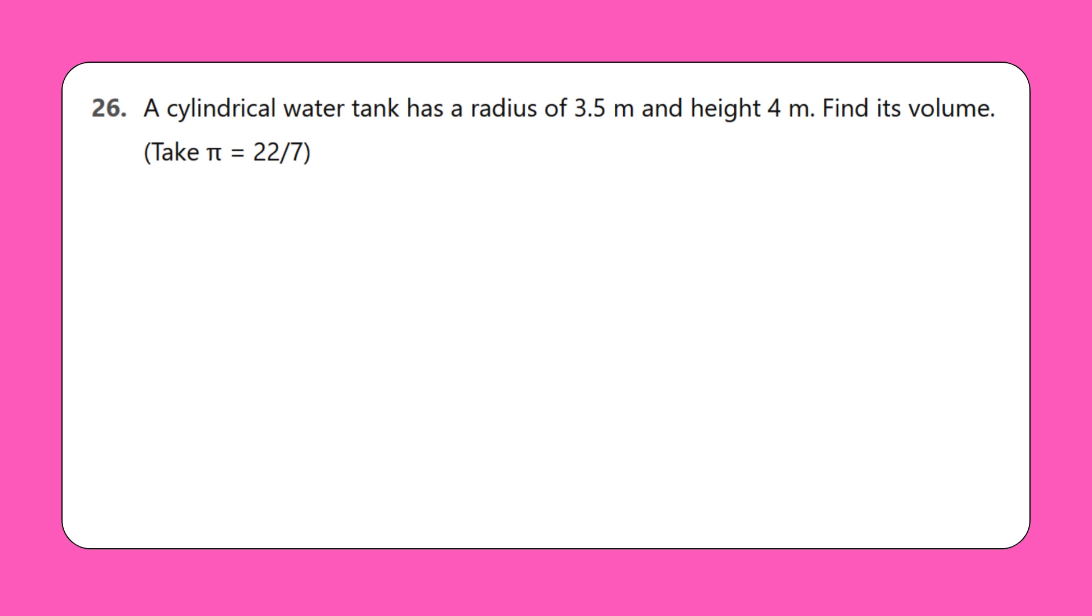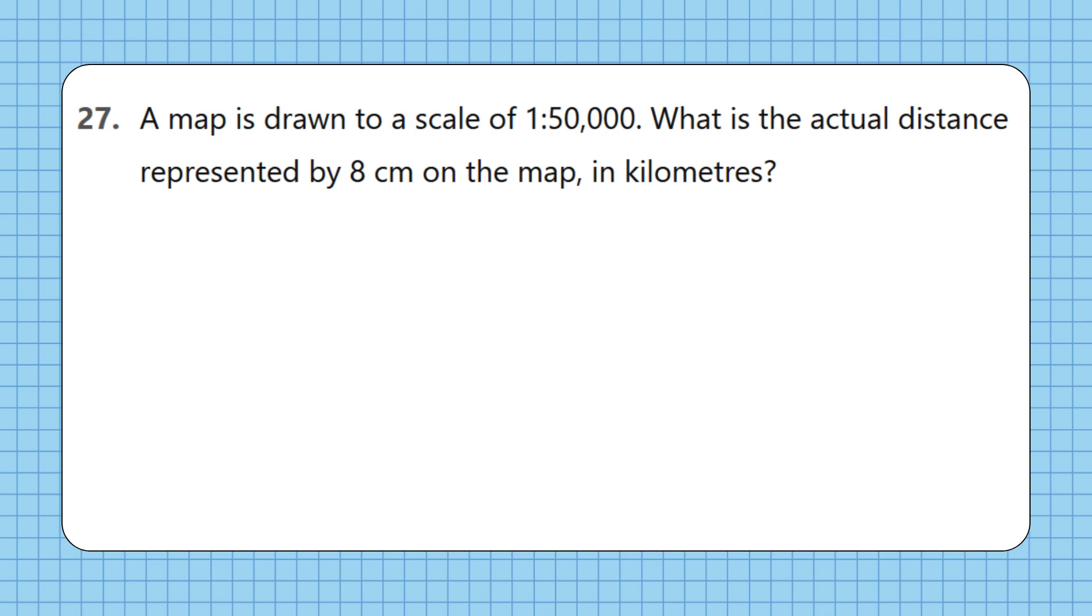26. A cylindrical water tank has a radius of 3.5 m and height 4 m. Find its volume. Take π = 22/7. 27. A map is drawn to a scale of 1:50,000. What is the actual distance represented by 8 cm on the map in kilometers?